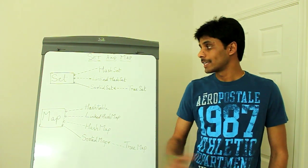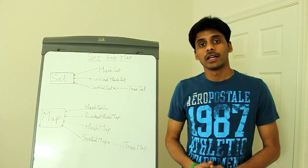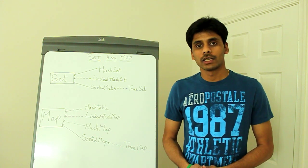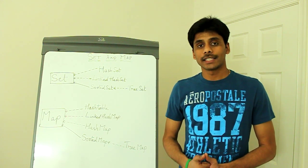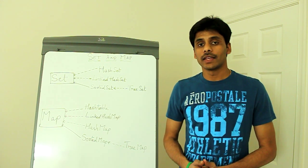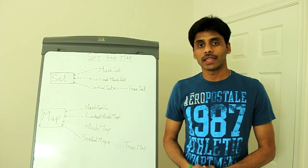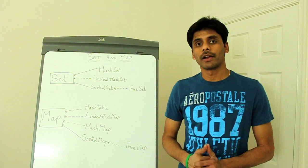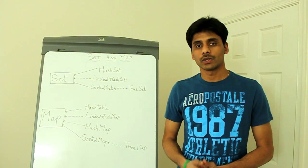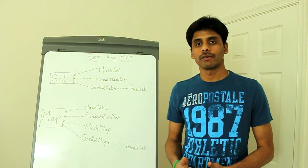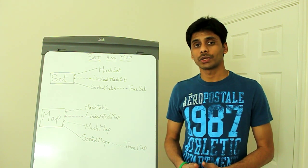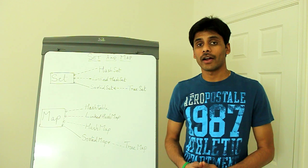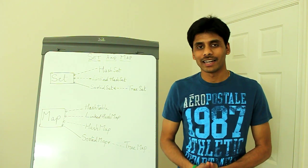A Set is a data structure that doesn't allow duplicates, and it does this by using the equals method that you override on your classes. So a Set uses the equals method to make sure that two objects are not identical.